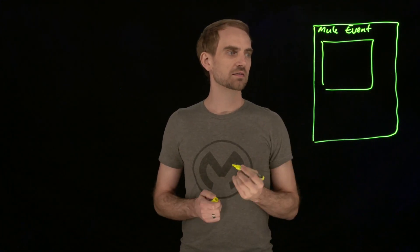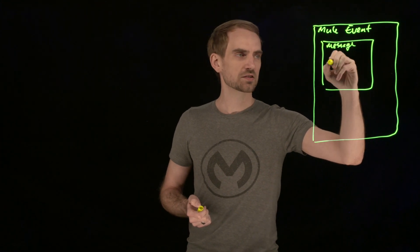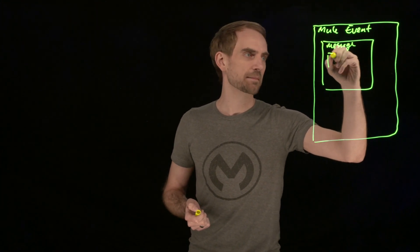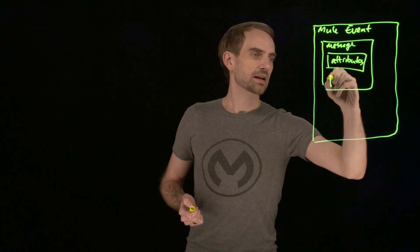So the first bit of data we need to think about is the message. It consists of two parts: attributes and payload.